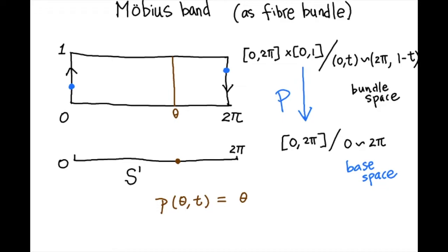So I can write this map as P(θ, t). This represents a point in the Möbius band and maps it to θ.